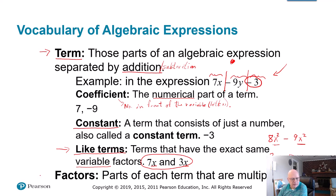And last of all on this slide, factors. They're the parts of every term that are multiplied. So for example, let's take a look at 7xyz. The factors are 7 and x and y and z because those are the pieces that are multiplied together.